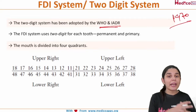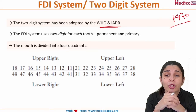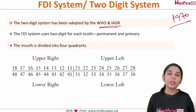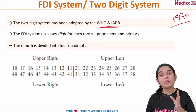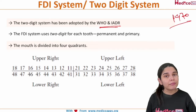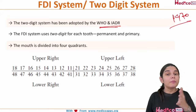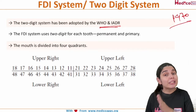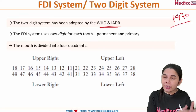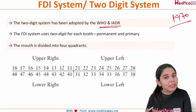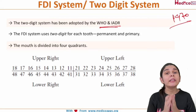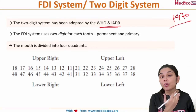The FDI system is also known as the two-digit system. It uses two digits for each tooth — applicable for both permanent and primary dentition. The tooth numbering system works by dividing the oral cavity into four quadrants.